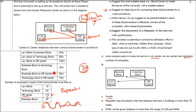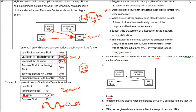Looking at the distances given, two distances exceed 70 meters: 80 meters and 105 meters. So a repeater must be placed between the Law Block and Technology Block, and another between the Law Block and HR Block, since both distances are more than 70 meters.